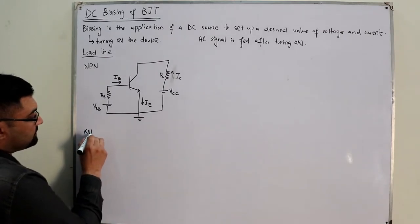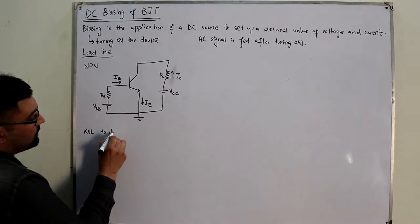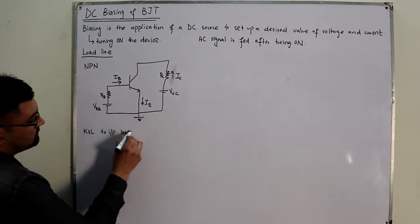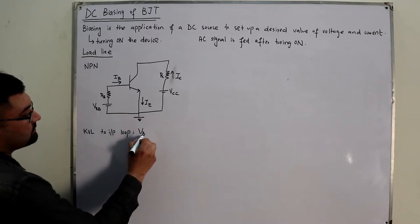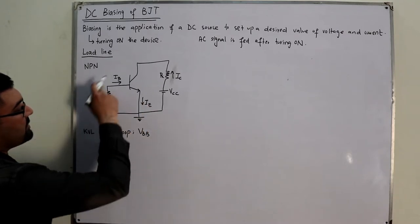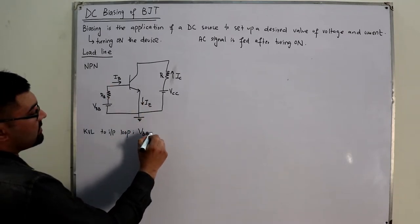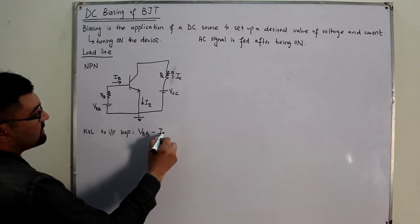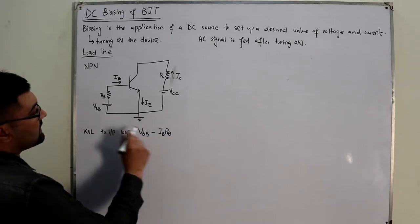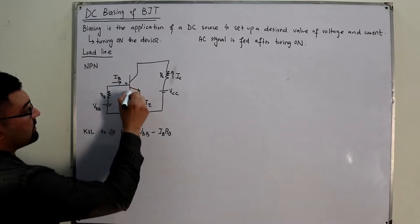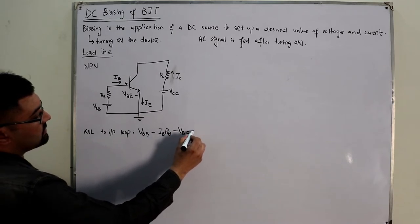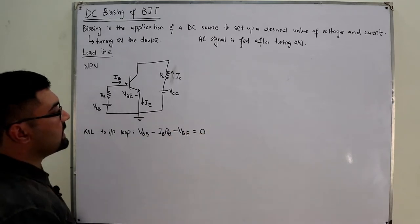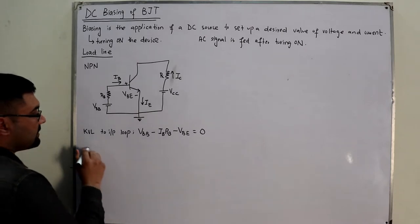Applying KVL to the input loop: V_BB − I_B·R_B − V_BE = 0.